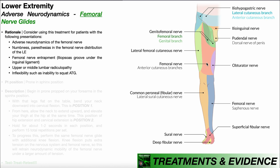Also, sometimes you can have the saphenous nerve involved as well. The saphenous nerve is the terminal branch of the femoral nerve, and this blue region is the sensory distribution of that. So really anywhere in this blue region, but especially this red region right here, is where you might expect to see those symptoms.